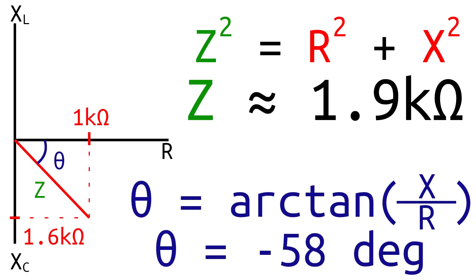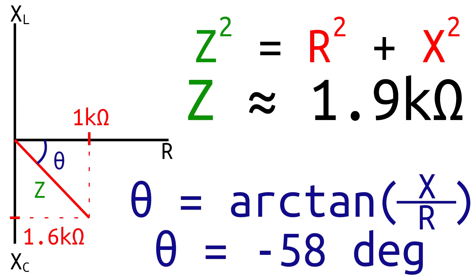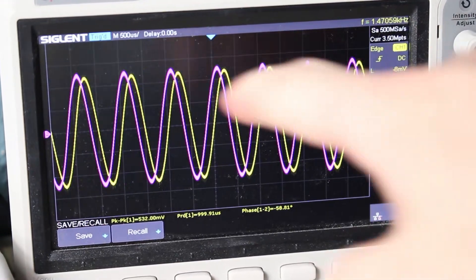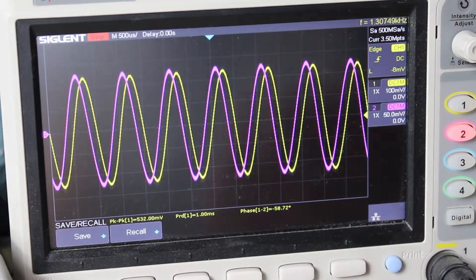And by drawing out the impedance triangle, we can use the Pythagorean theorem to solve for the total impedance. And if we do that, we should get an impedance of 1.9kohms and a phase angle of negative 58 degrees, which means that the current should lead the voltage. And checking this in the oscilloscope, we are correct. The purple line here is the current and the yellow one is the voltage.